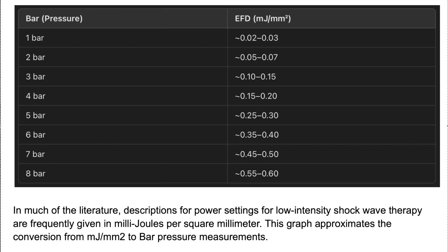Using the International Society for Medical Shockwave Treatment guidelines for the treatment of different body conditions with shockwave therapy, you'll notice that most of their energy recommendations are in something called energy flux density, which is millijoules per millimeter squared — probably the more precise way to measure shockwave therapy energy.